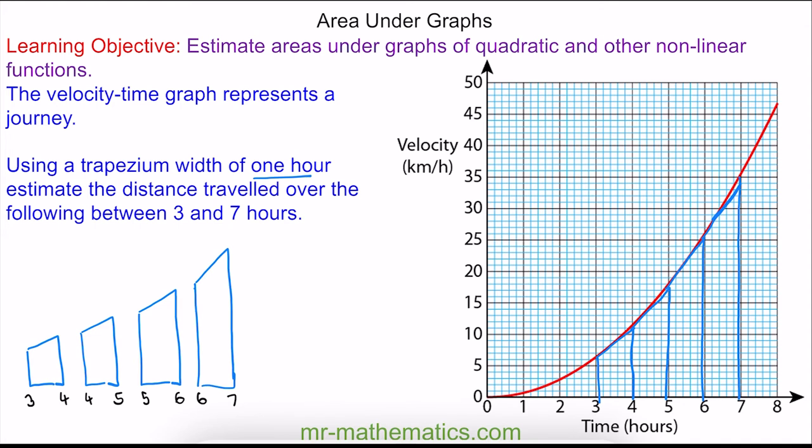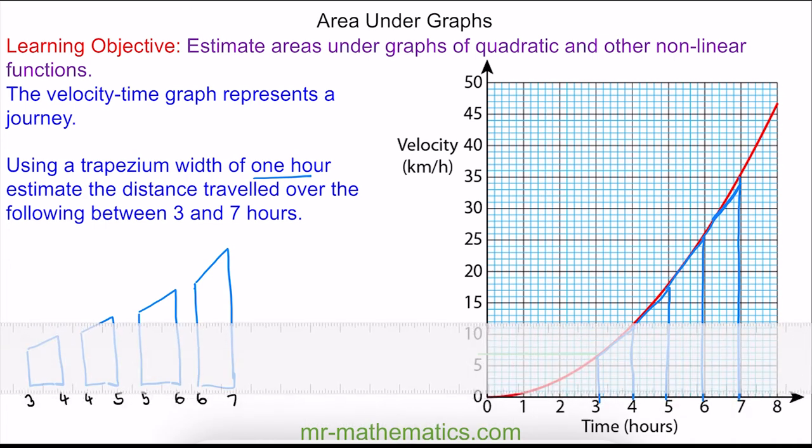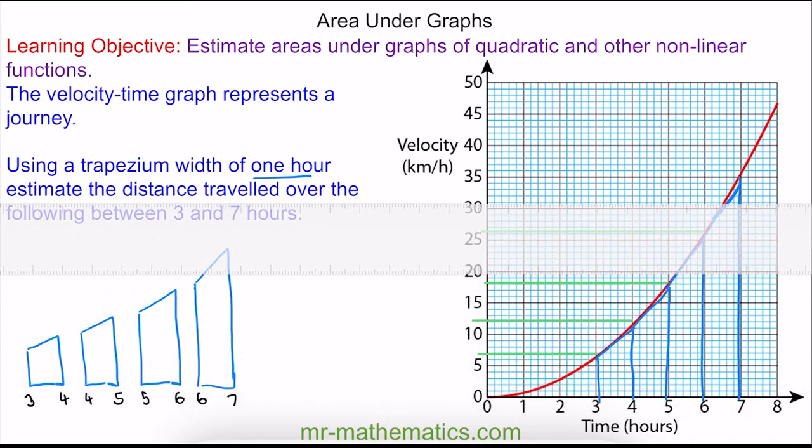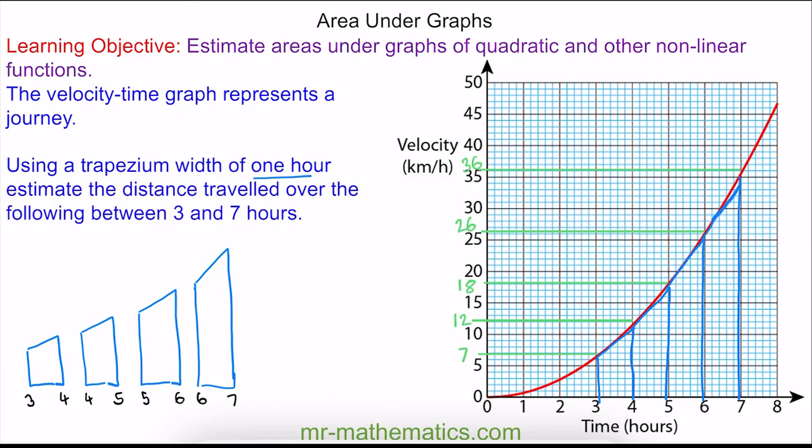So now I'm going to work out the height of each trapezium by drawing the line from the curve to the y-axis. And I can mark these heights on each trapezium. And remember to work out the area of the trapezium, I can double it to make it into a rectangle. When this rectangle will have a length of 19, a base of 1. So the rectangle is 19 kilometres, which means the trapezium has an area of 9.5 kilometres.